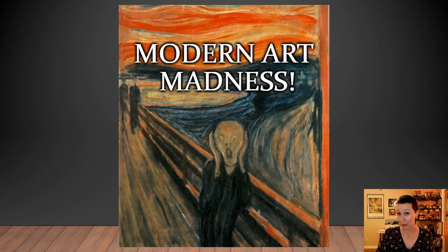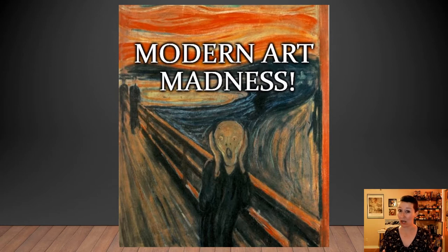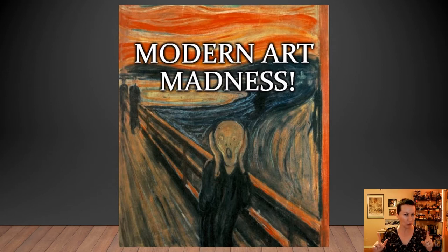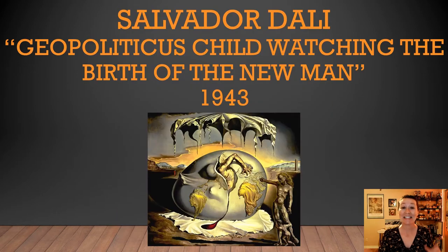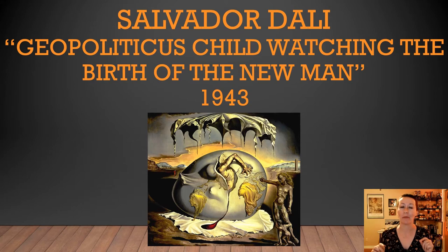The class that inspired this particular video is Modern Art Madness. You may recall from a previous video that I also taught Modern Art Madness Volume 2 — it takes two volumes at least to scratch the surface of the craziness of modern art. And today we're going to talk about Salvador Dali's epic painting, Geopoliticus Child, Watching the Birth of the New Man from 1943. Buckle up, everybody, because it's going to be a crazy ride.